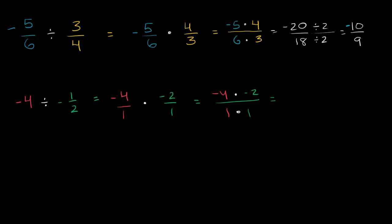And so this gives us, so we have a negative 4 times a negative 2. So it's a negative times a negative. So we're going to get a positive value here. And 4 times 2 is 8. So this is a positive 8 over 1. And 8 divided by 1 is just equal to 8.